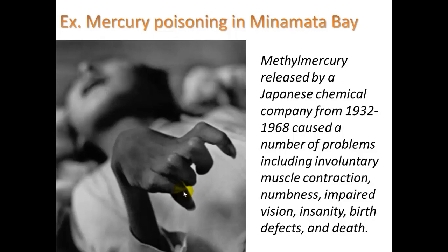As far as the mercury one goes, there's a boy from Japan who suffered poisoning from methylmercury that was released by a Japanese chemical company — actually for almost four decades, from 1932 to 1968. They were releasing mercury as part of their manufacturing processes, and it caused a number of problems including involuntary muscle contraction, like you can see with this boy, numbness, impaired vision, and sanity. You may have heard the term 'the mad hatter' — they used to use mercury to make felt hats. And birth defects and death. We'll see that more in our next unit.